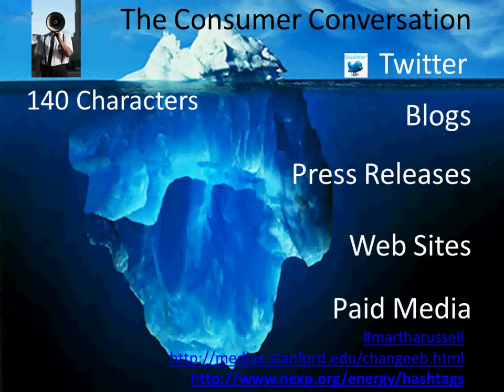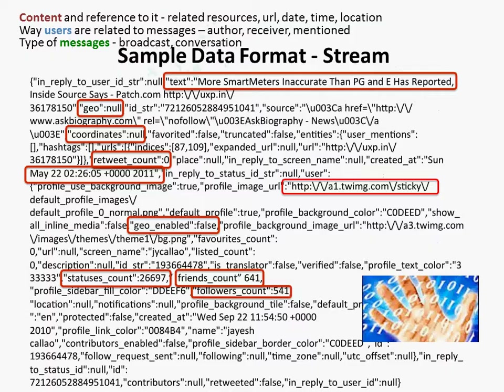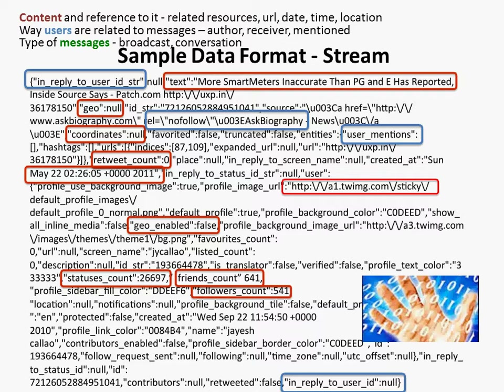So in a Twitter feed, 140 characters, you will often see a URL that is a link to a blog, to a press release, to a website, to paid media, as well as conversations about what people are doing. This is what a Twitter message looks like. Data scientists would recognize how it can easily be parsed into content, and the reference to content, that's in red. The users, and the references to the users, are in blue. And the messages, and the message itself is in green.